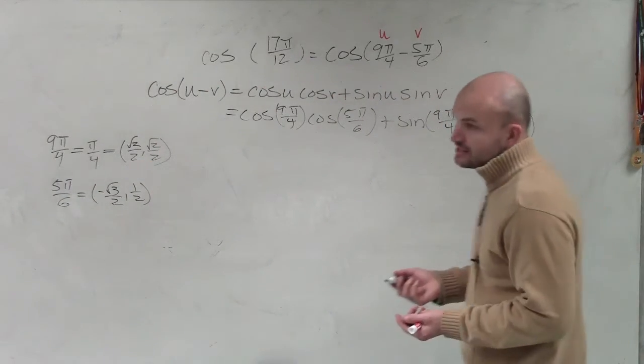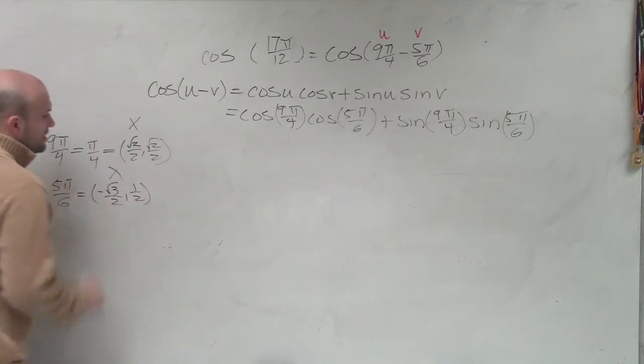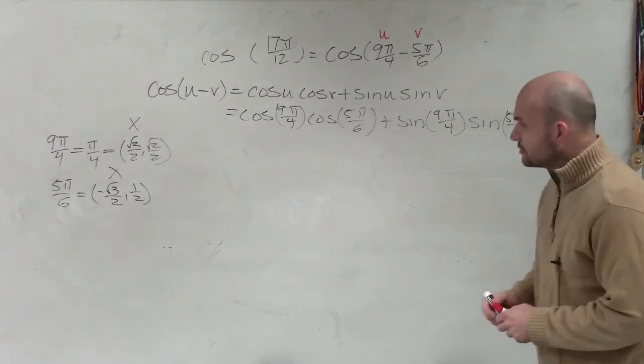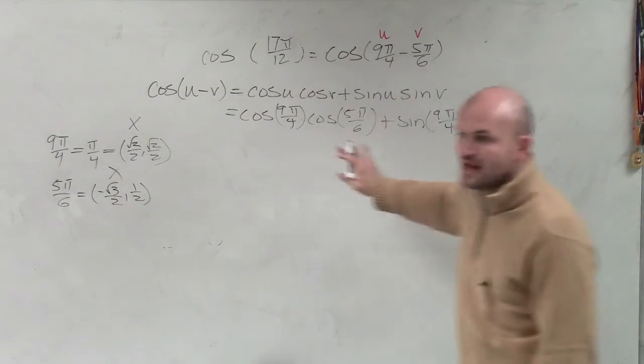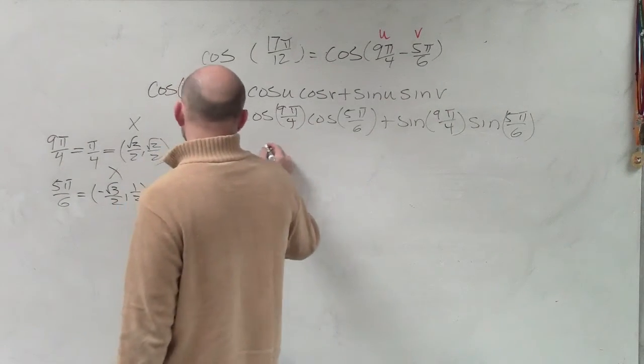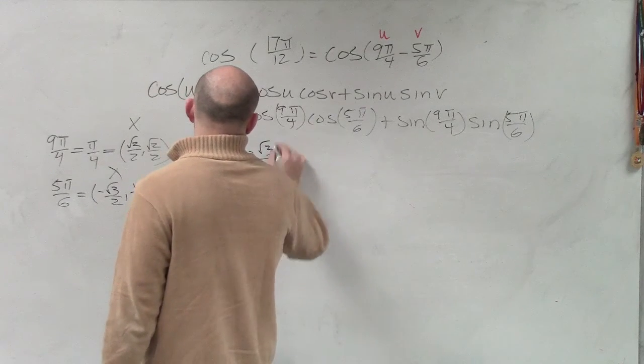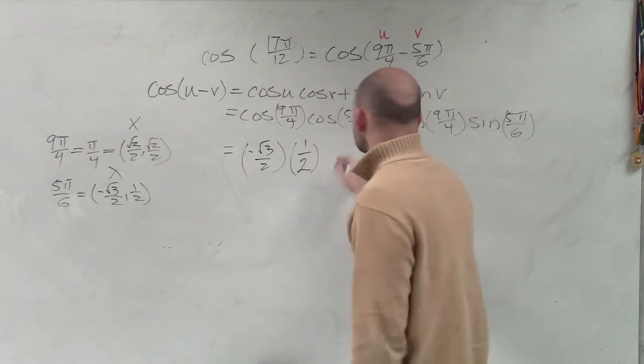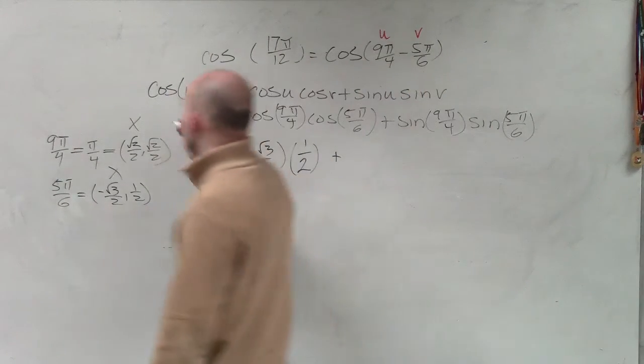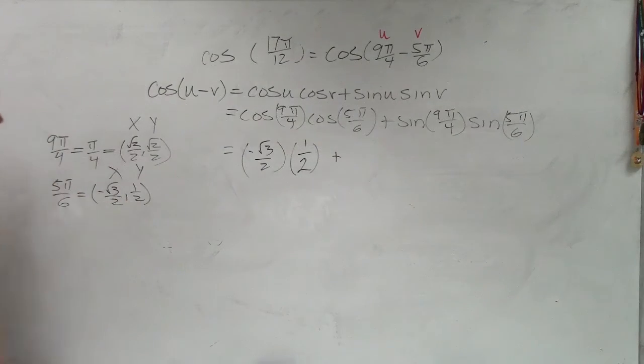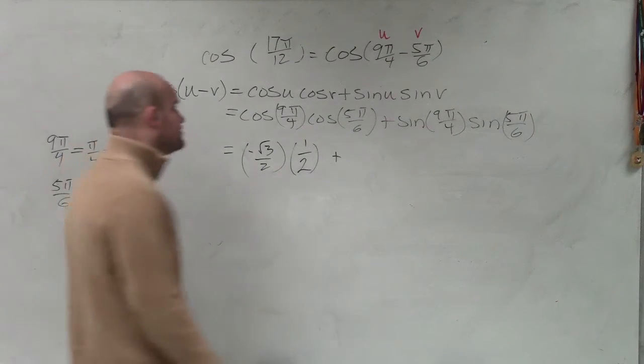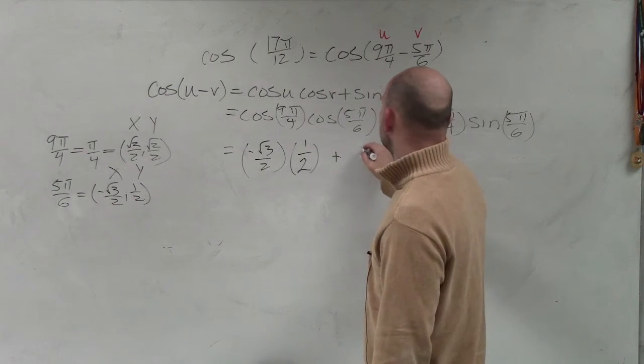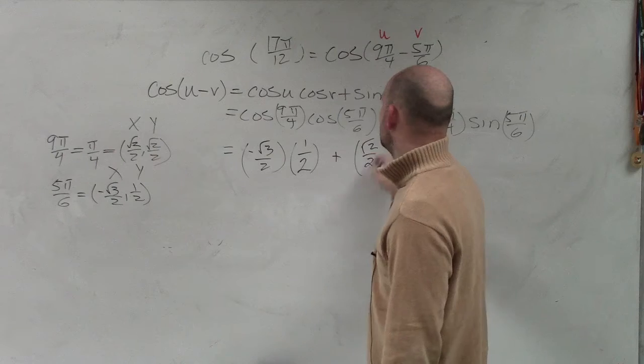So now, to evaluate the cosine, remember the cosine is your x-coordinate of where your angle crosses the unit circle. So now what we're going to do is just evaluate for each of these coordinates. So we'll write in square root of 2 over 2 for cosine of 9π over 4, and we'll write in negative square root of 3 over 2 for cosine of 5π over 6. Plus, the sine now represents the y-coordinate.